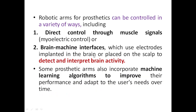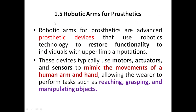So I hope you understood. To briefly recap: robotic arms are advanced prosthetic devices used to restore the functionality of an individual — restoring the mobility and function of the arm and hand.